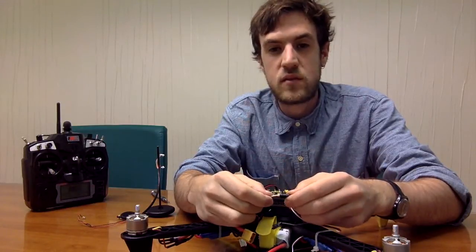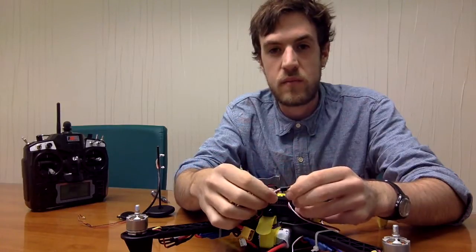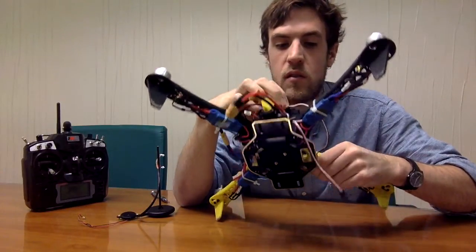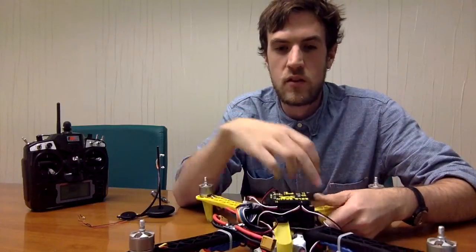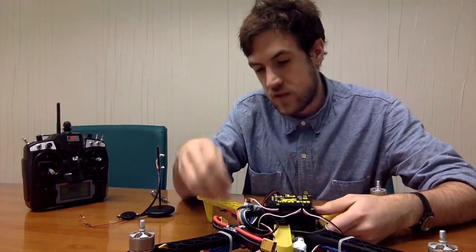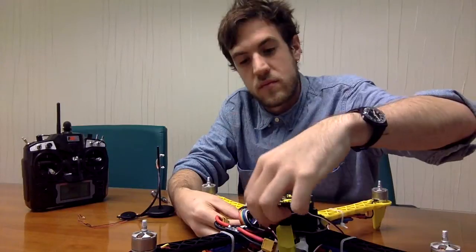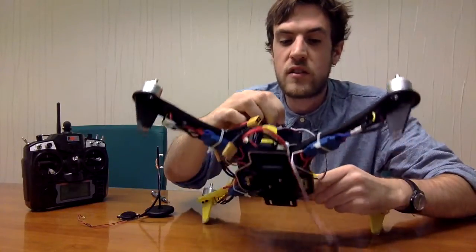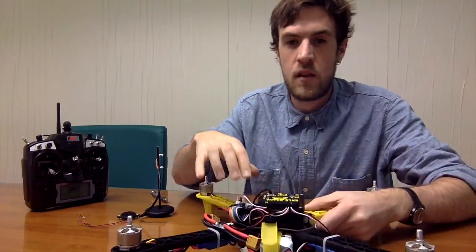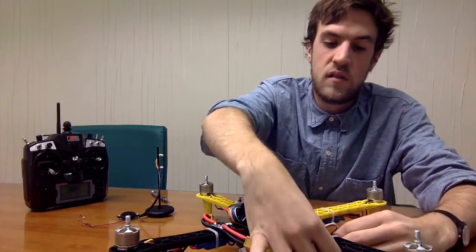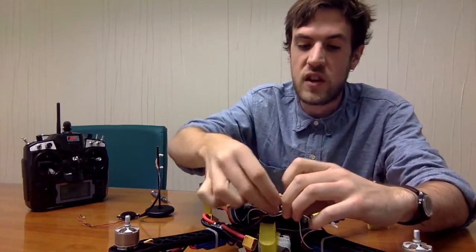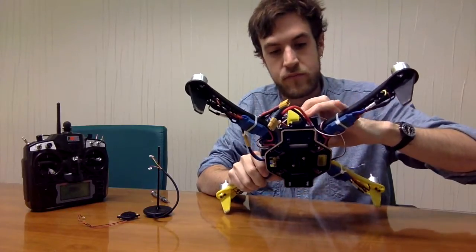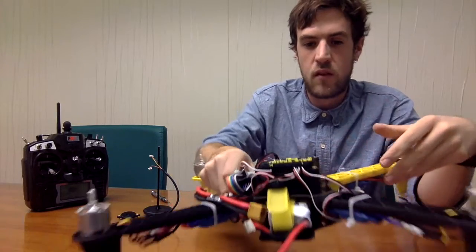Just remember to connect the white wire in the first row because it's the signal wire. So one, two, third one is this one. Repeat the same, take the ESC wire and plug it into the third channel. And lastly, take the last one.